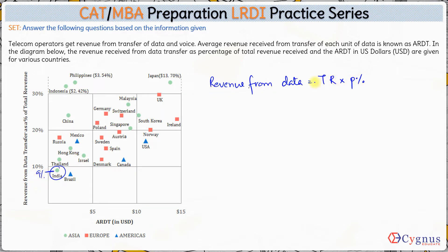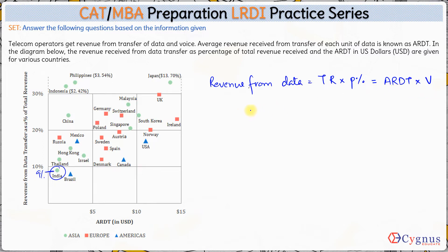Revenue from data as 9% of total revenue holds for all countries. This revenue from data is also equal to ARDT multiplied by volume — where ARDT is average revenue per unit and volume tells us how much data is consumed. So the amount of data consumed multiplied by revenue per unit gives total revenue from data. Hence: Total Revenue × P% = ARDT × V, which means Volume = (Total Revenue × P%) / ARDT.